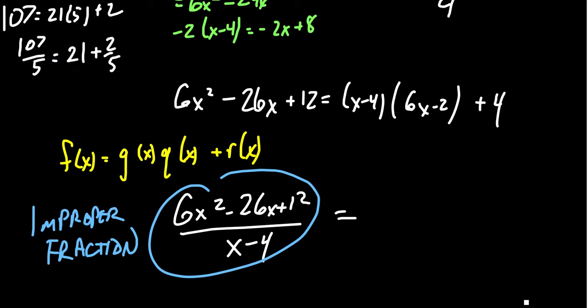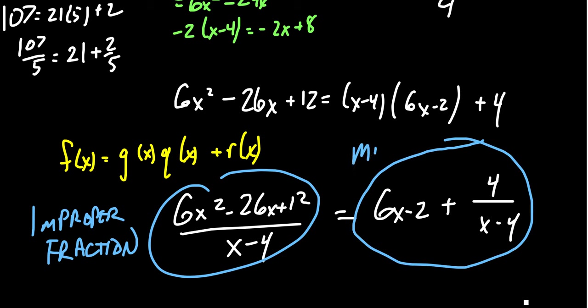When it comes to polynomials, the whole number part, that is the part with no fraction, would be a polynomial. And so we're going to get 6x - 2, that's our quotient. And then we add to it a proper fraction, which is going to be 4 over x - 4. So we could argue that this right here is our so-called mixed number, but we shouldn't call it a mixed number, it's like a mixed polynomial.